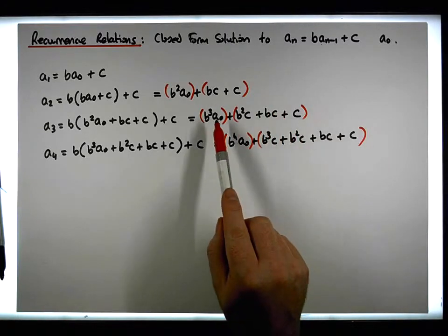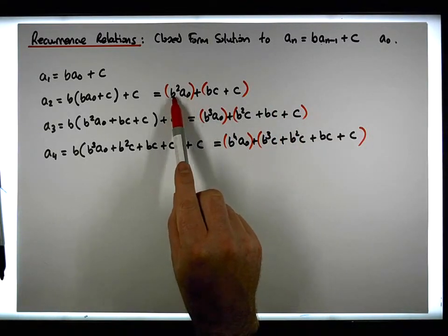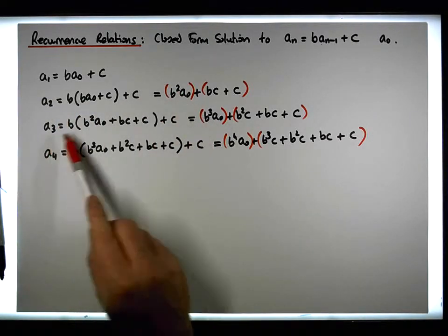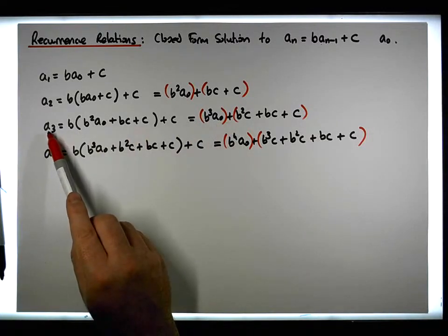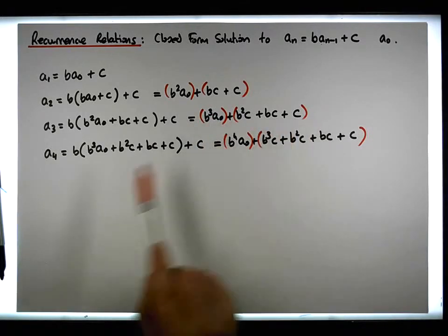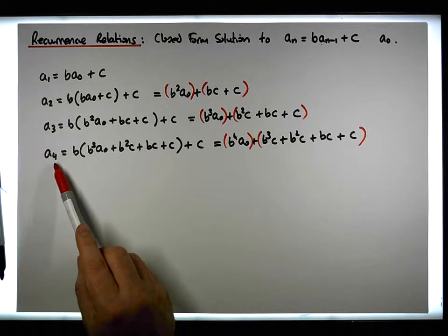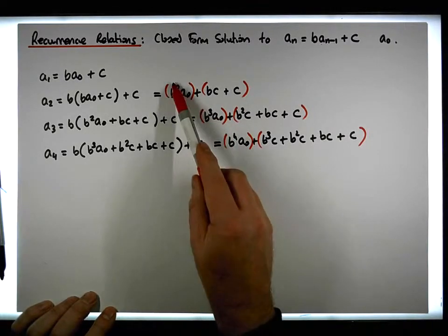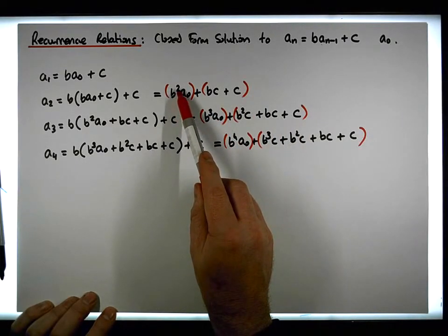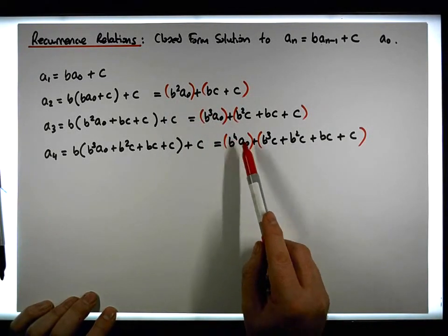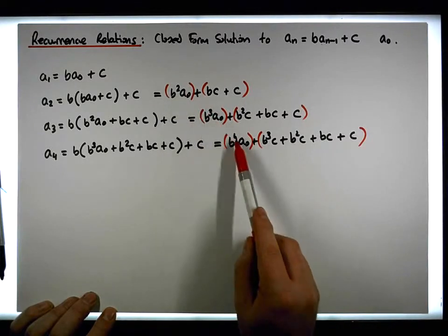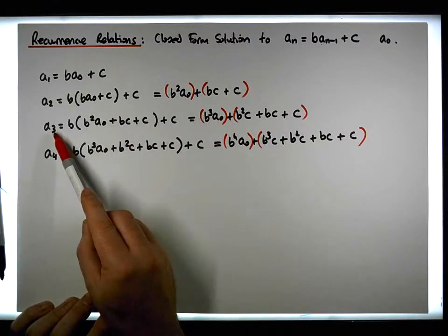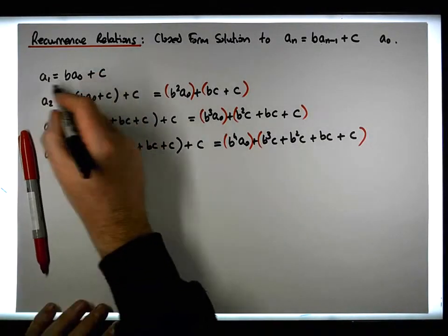The important thing to notice is that the first term is clearly b to the power of the index times a₀. For a₂ it's b²·a₀, for a₃ it's b³·a₀, for a₄ it's b⁴·a₀. There's a clear pattern: the exponent is directly equal to the index of the term we're looking for.